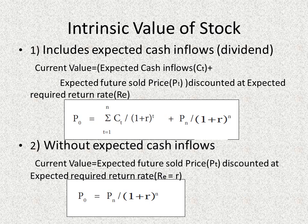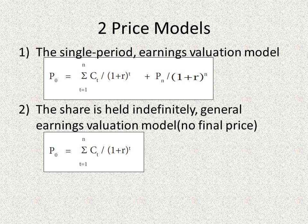In this case, it is more simple. The current value is equal to the expected future sale price discounted at the expected required return rate, just as the formula shown at the bottom of the slide. We continue with the case that you will have expected income during your holding periods.